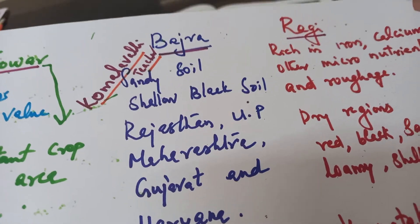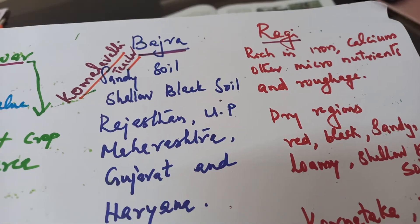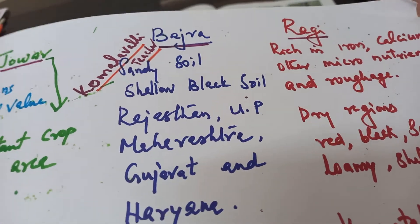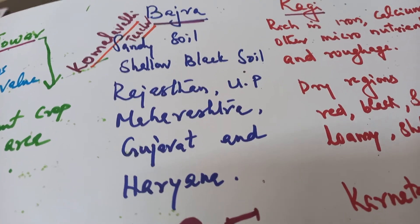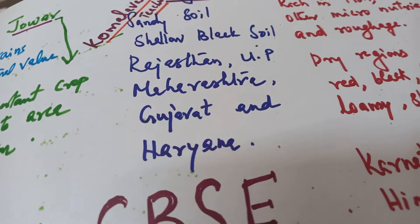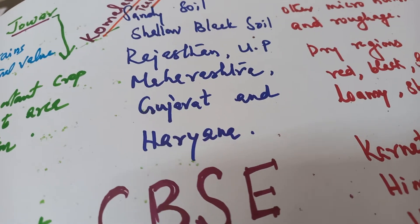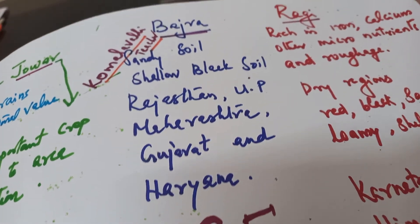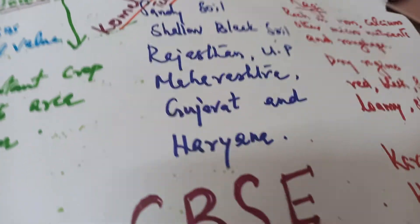Then Bajra. It needs sandy soil and shallow black soil. Major growing areas are Rajasthan, Uttar Pradesh, Maharashtra, Gujarat, and Haryana.